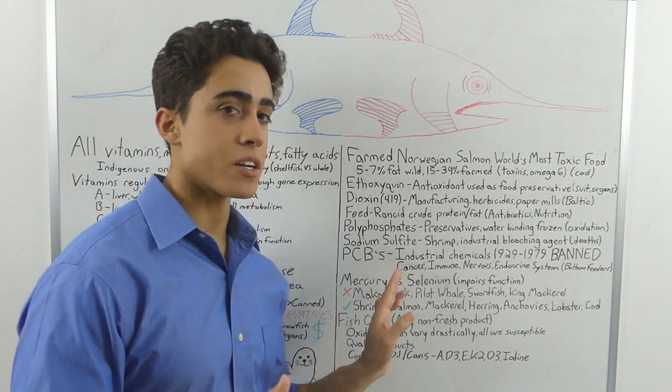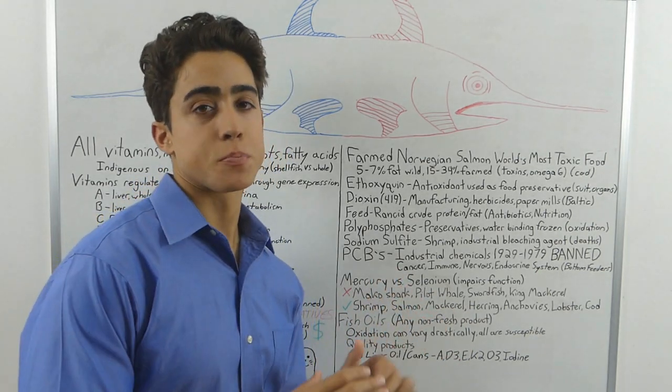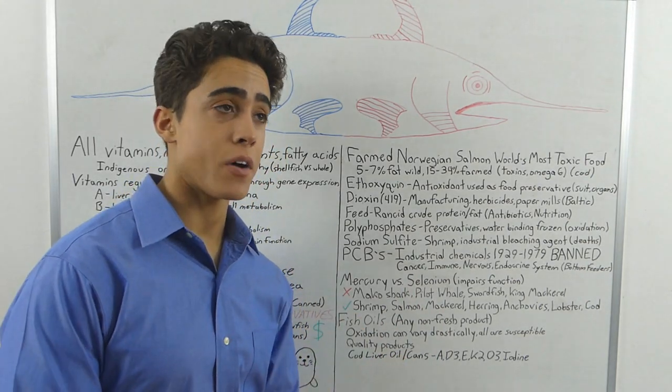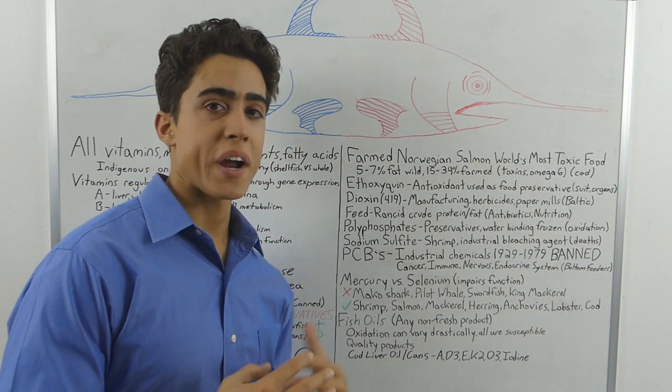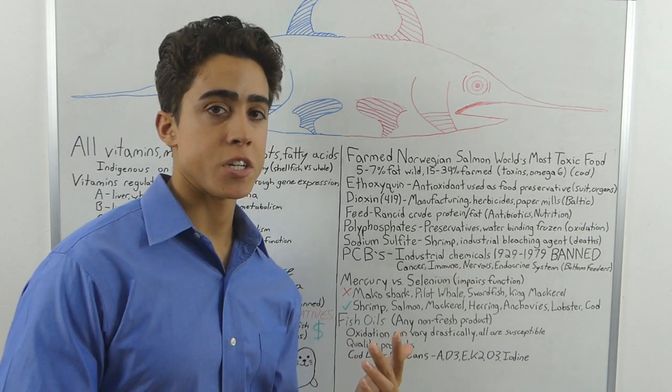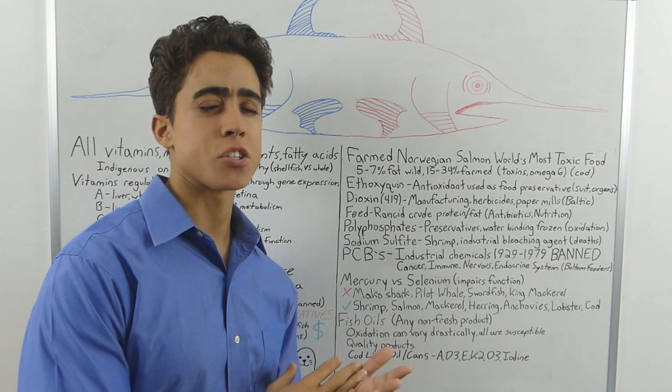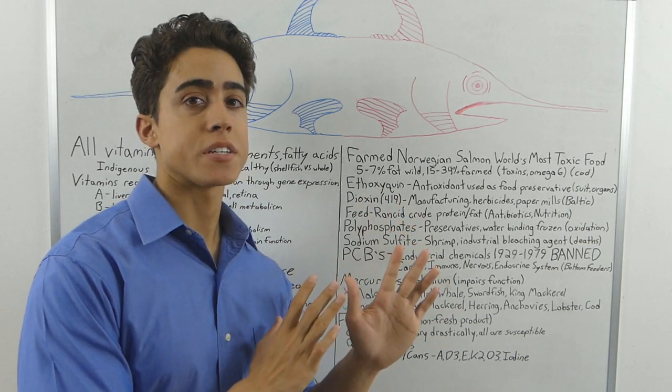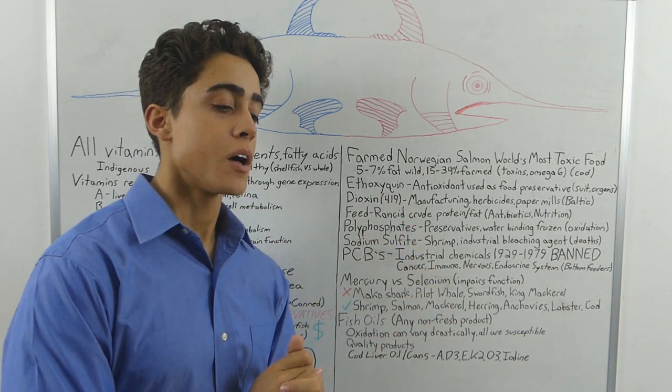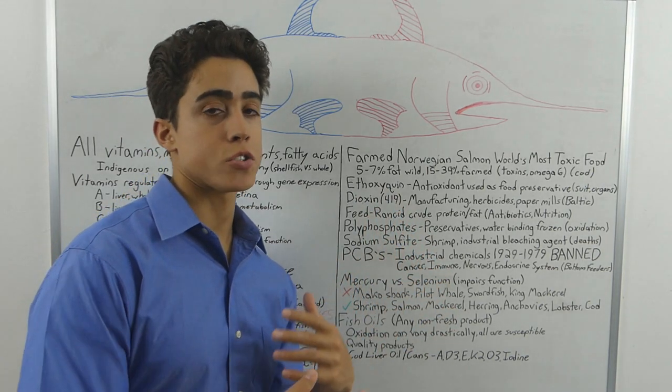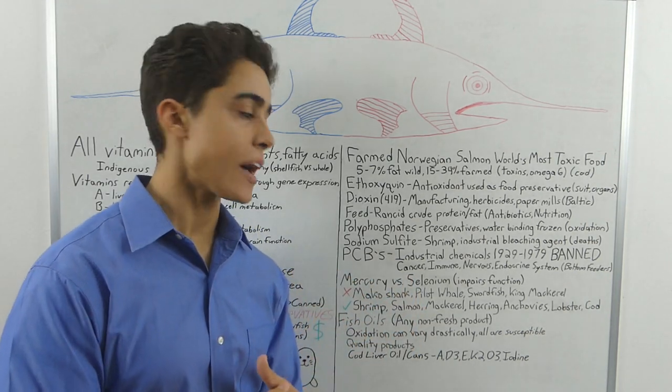PCBs are polychlorinated biphenyls. They are industrial chemicals that were used from 1929 to 1979 until they were banned. They are associated with cancer, immune, nervous, endocrine system, and mostly an issue with bottom feeders. A lot of this stuff really is brushed under the rug. Something I don't actually have on here is the radiation from Fukushima and a lot of these other issues. I don't want to go too much into that. It's a very sensitive topic, but there are certainly concerns oriented around it.